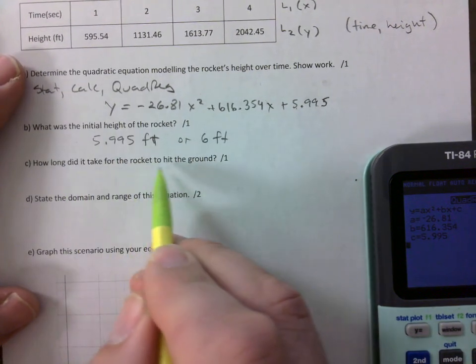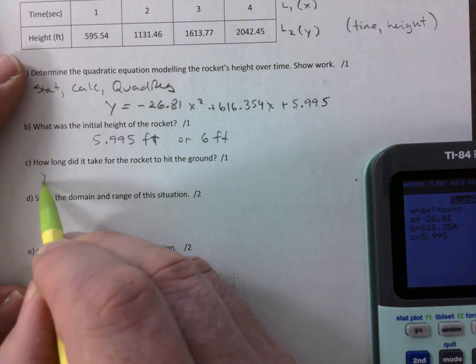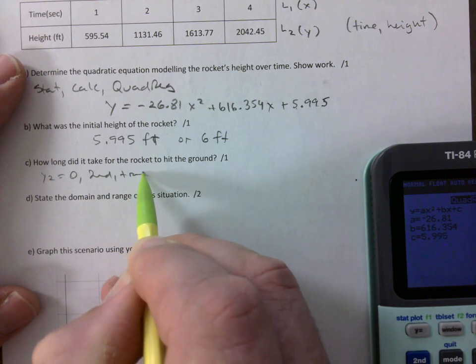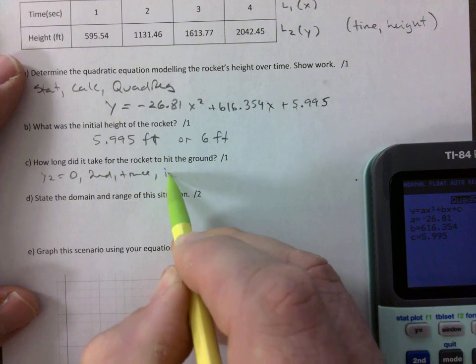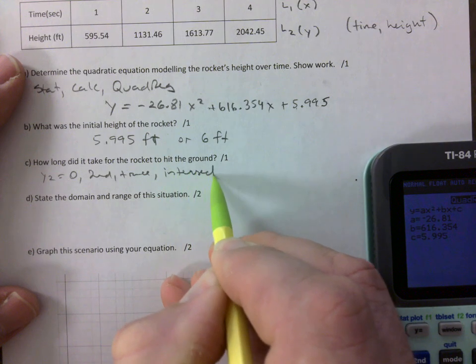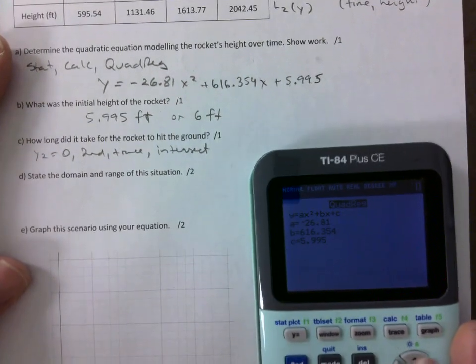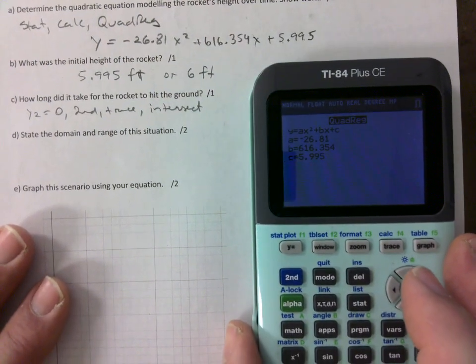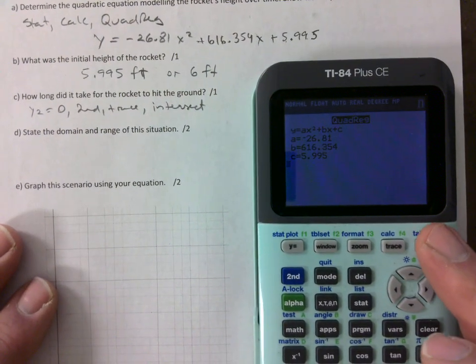How long did it take for the rocket to hit the ground? I need to find my X intercept. So Y equals 0. Second trace intersect. I haven't even graphed this yet. Do you know? Have you noticed that? I haven't even graphed this thing. But at this point, I need to figure that out. So I'm going to hit graph.